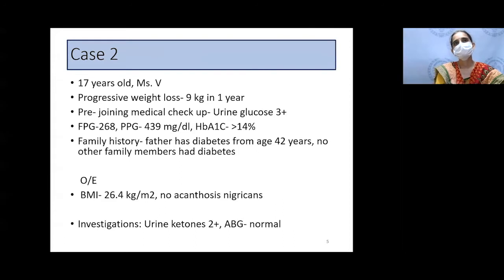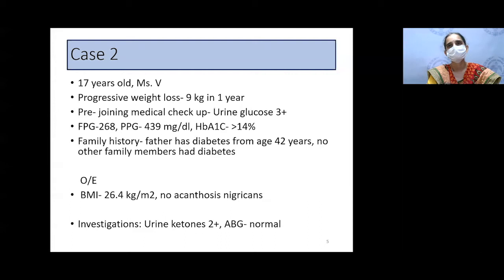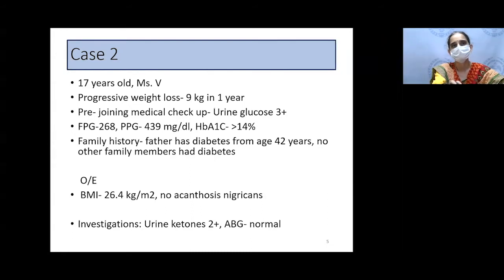The second case is another 17-year-old girl who came one week later with progressive weight loss of 9 kg over one year. She discovered she had 3+ urine glucose during a pre-nursing college medical checkup, with postprandial glucose more than 400. She had a family history: her father had diabetes from age 42 and had already developed kidney disease. No other family members were affected. Her BMI was 26.4 kg/m², no acanthosis nigricans. Further investigations showed urine ketones positive but arterial blood gas analysis normal.